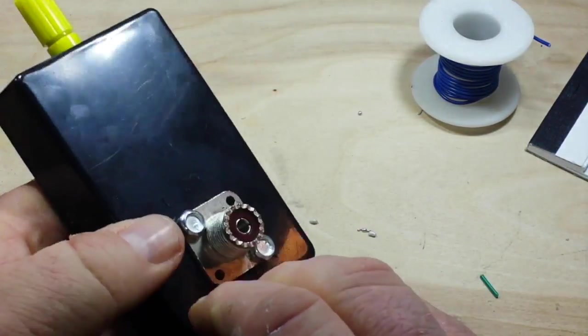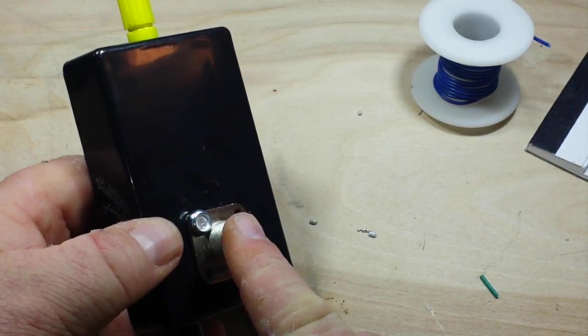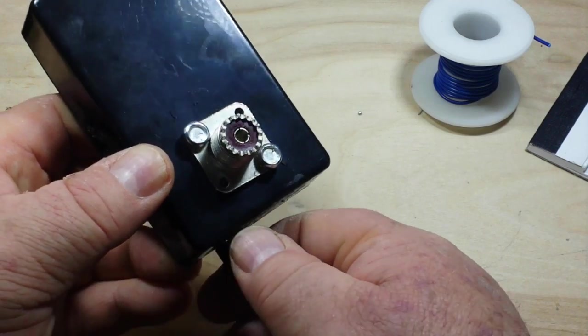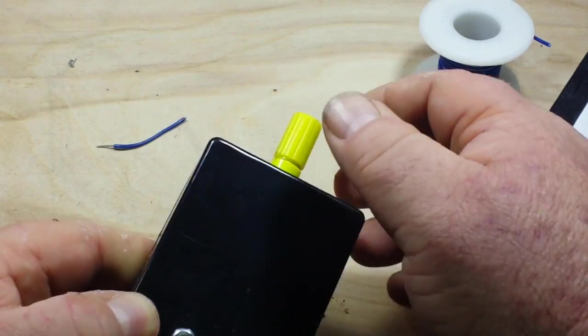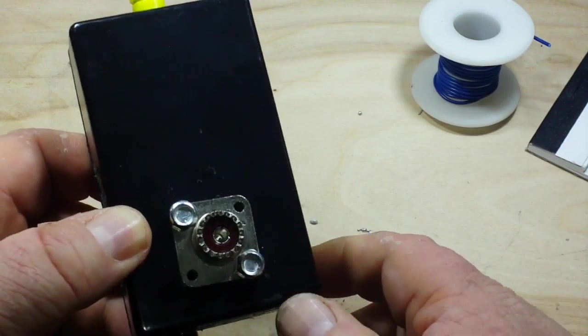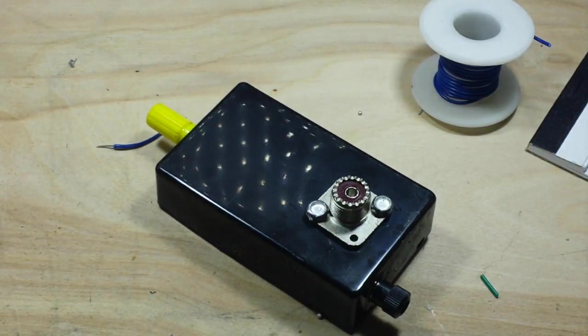Our input comes in here. Ground wire goes out there. Antenna wire goes out there. 9:1 auto transformer allows you to use a high impedance antenna with a low impedance radio. So that's it.